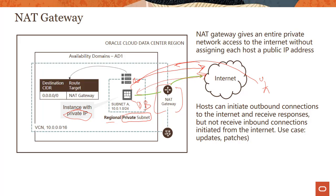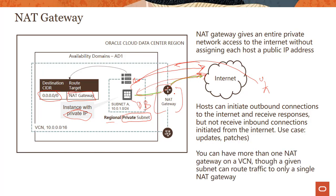As seen in the previous slides, the rule in the route table basically says all packets destined for any IP address should go through NAT gateway — sending all traffic from this private subnet to the NAT gateway. If you're getting patches or updates, those packets come back, and that is all managed by the NAT gateway. Important: you can have more than one NAT gateway on a VCN, though a given subnet can route traffic to only a single NAT gateway. This is a little different than the internet gateway.